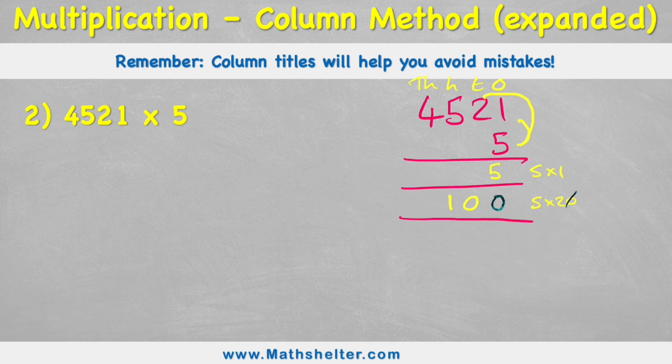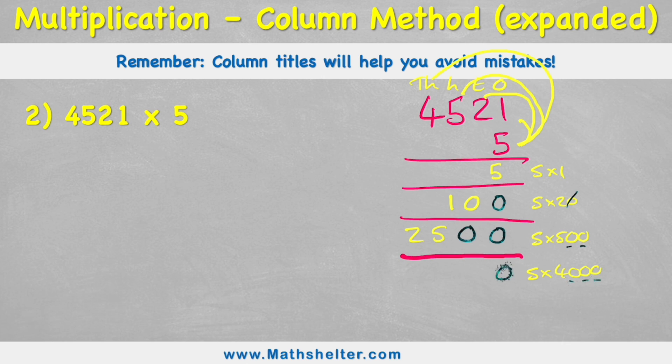Now my next part of the question is five times 500. And here I can now see I've got two placeholders. So I'll put my placeholders in place. Five times five is 25. And my last question is five times 4,000. Now I can see I have one, two, three placeholders. And now I can just do five times four. Five times four is 20. And now I've been clever enough to leave me some space.